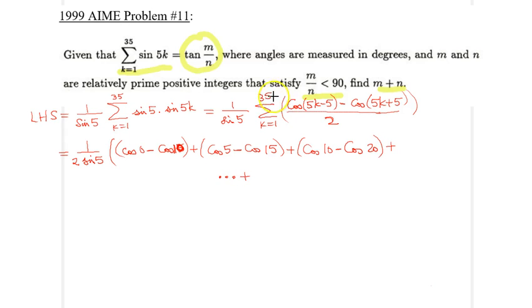And finally, if I plug in 34, I would get cosine of 5 times 34, which is 170 minus 5, 165 minus cosine of 5 times 34. Again, 170, so 175.